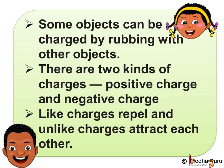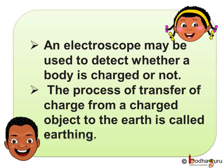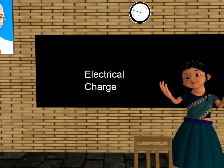To sum up what we learned today: some objects can be charged by rubbing with other objects. There are two kinds of charges — positive charge and negative charge. Like charges repel and unlike charges attract each other. The electrical charges produced by rubbing are called static charges. When charges move, they constitute an electric current. An electroscope may be used to detect whether a body is charged or not. The process of transfer of charge from a charged object to the earth is called earthing. Bye bye children!